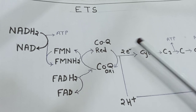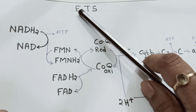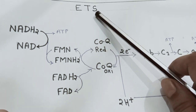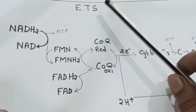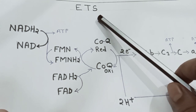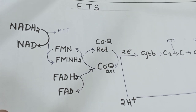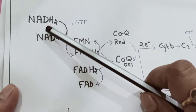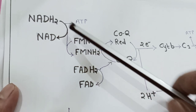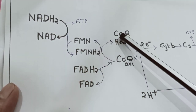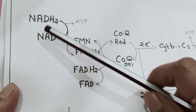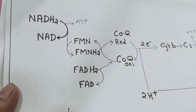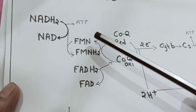Good morning students. Today we discuss ETS, which is also known as terminal oxidation. ETS stands for Electron Transport System. It is called terminal oxidation because the coenzymes NAD (in its reduced form NADH2), FADH2, FMNH2, and coenzyme Q — all reduced during the process of respiration — are now converted back to their oxidized forms: NAD, FAD, and FMN.